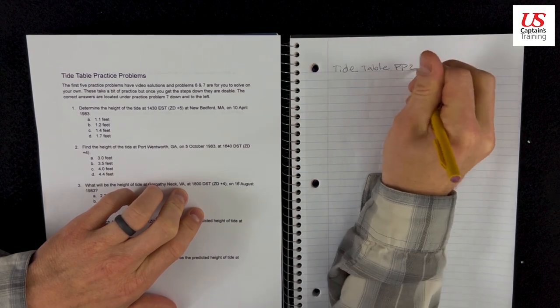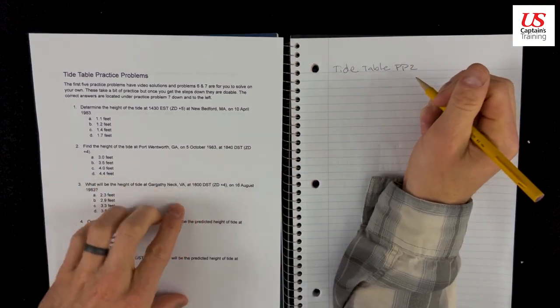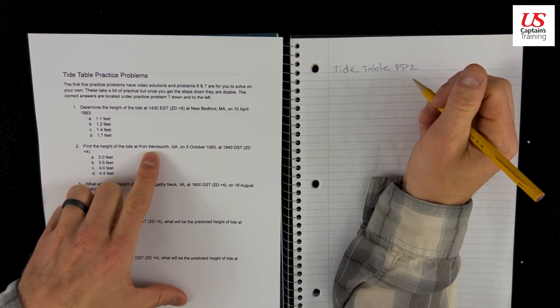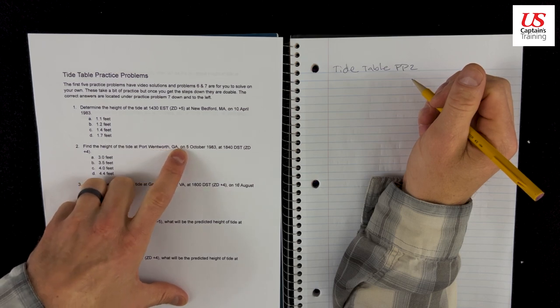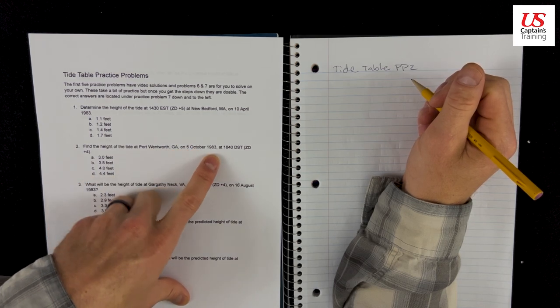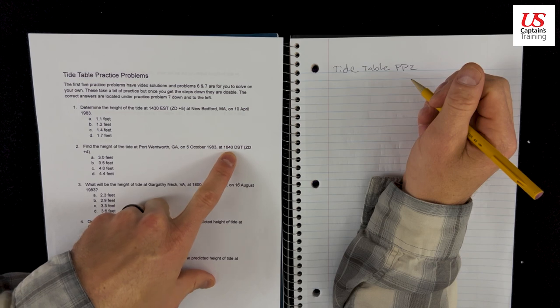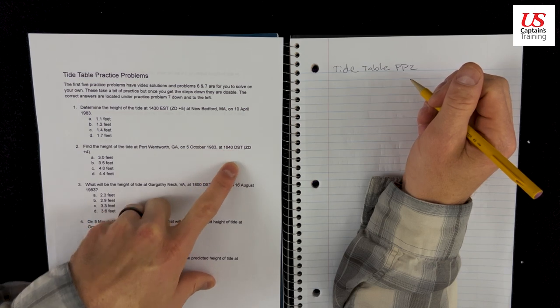Tide table practice problem two. It reads, find the height of the tide at Port Wentworth, GA on the 5th of October, 1983 at 1840 DST ZD plus four.